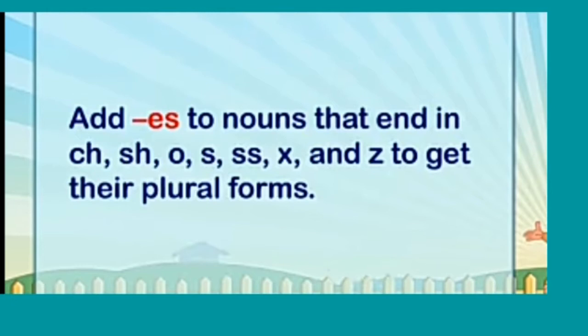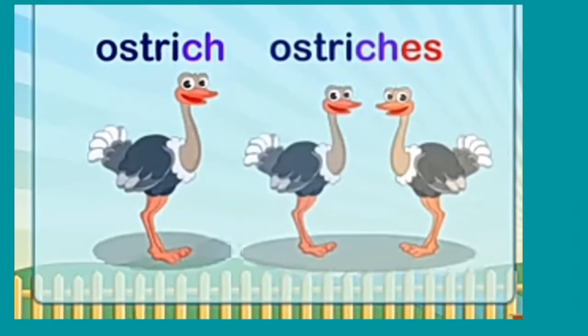Jo bhi nouns ke end mein — last mein — CH, SH, O, SS, X, and Z diya ho, wahan par hum likhenge ES. For example, ostrich: the picture shows one ostrich and then two ostriches. Ostrich ke last mein CH hai, isliye hum ES likhenge. Plural ban jayega — ostriches.